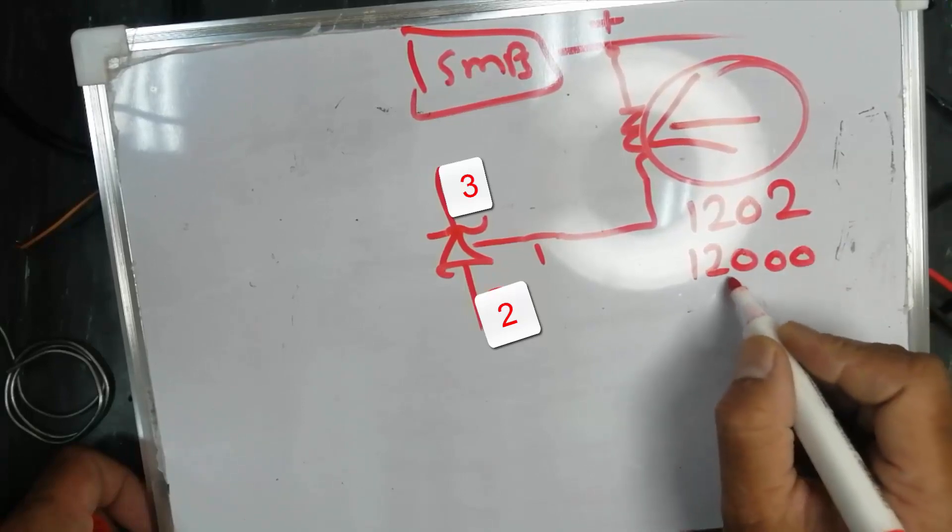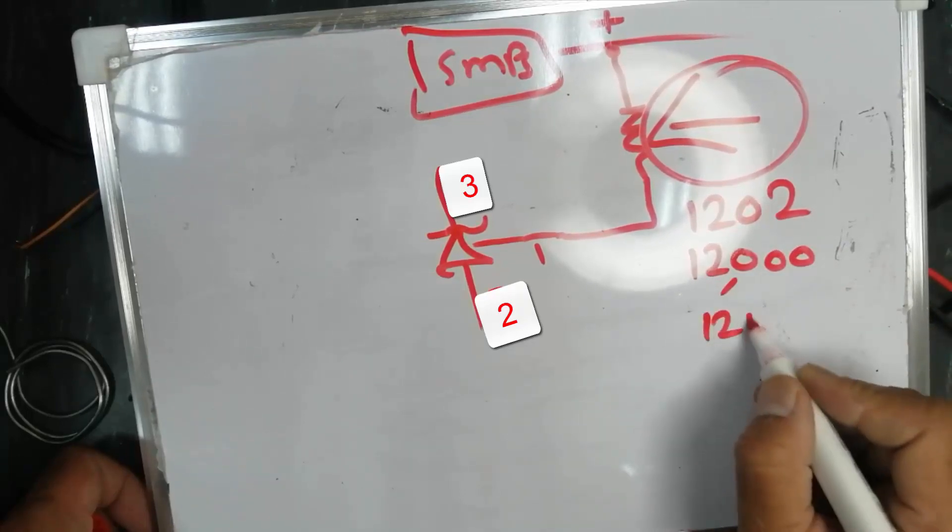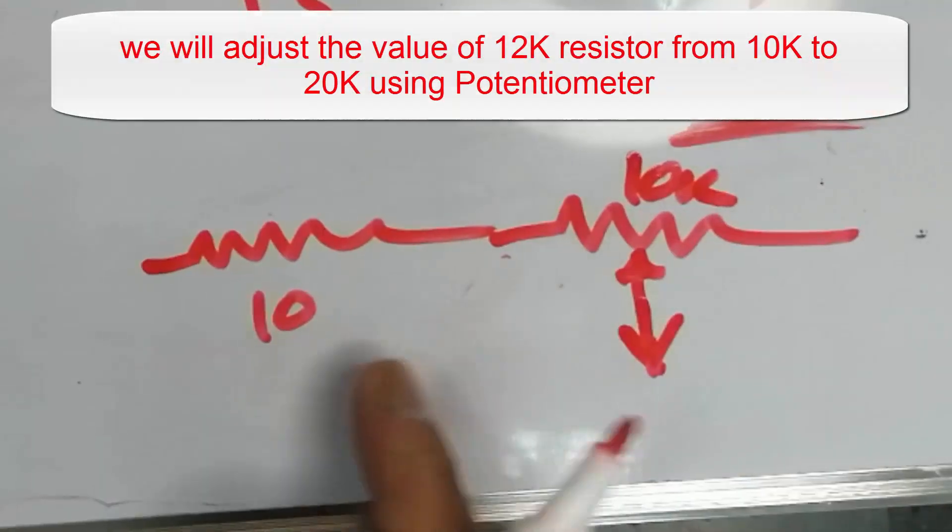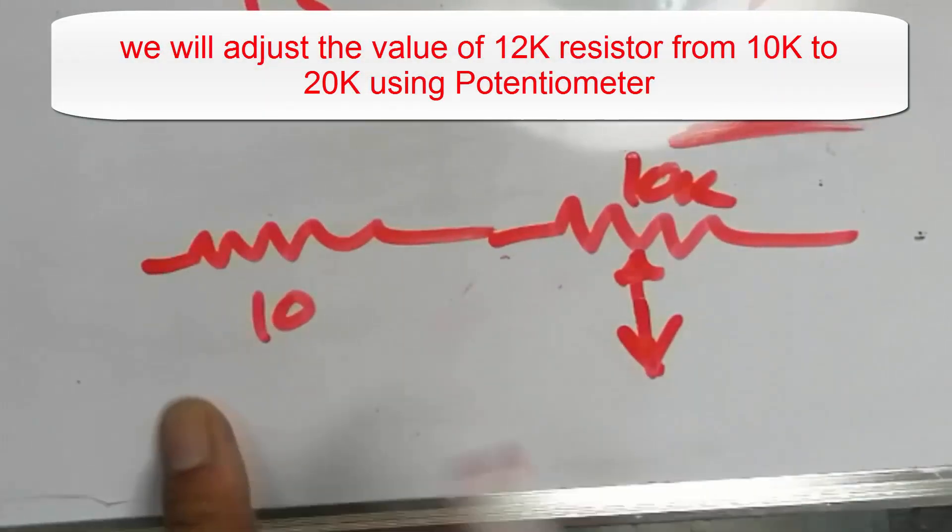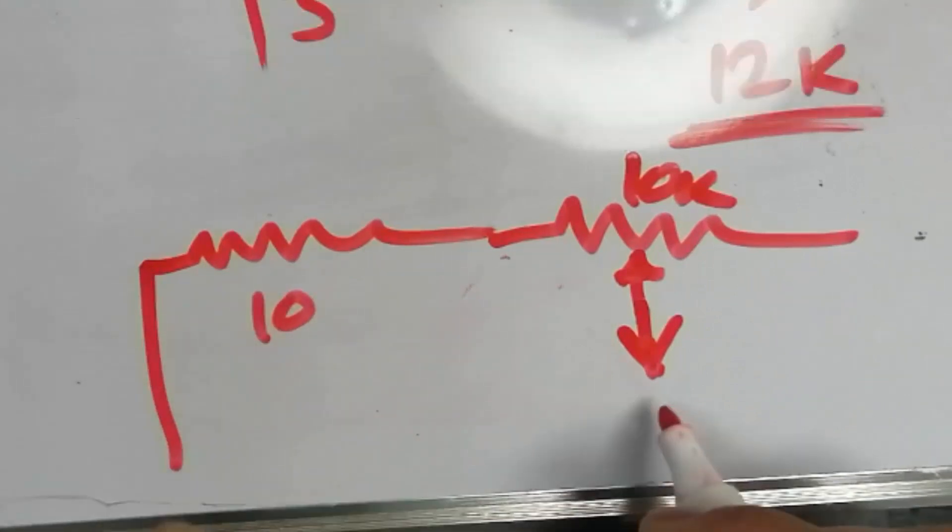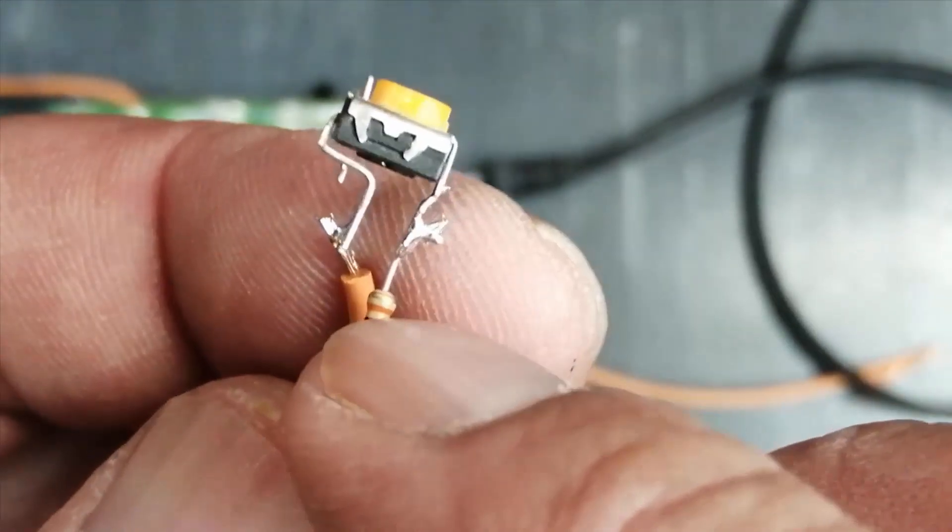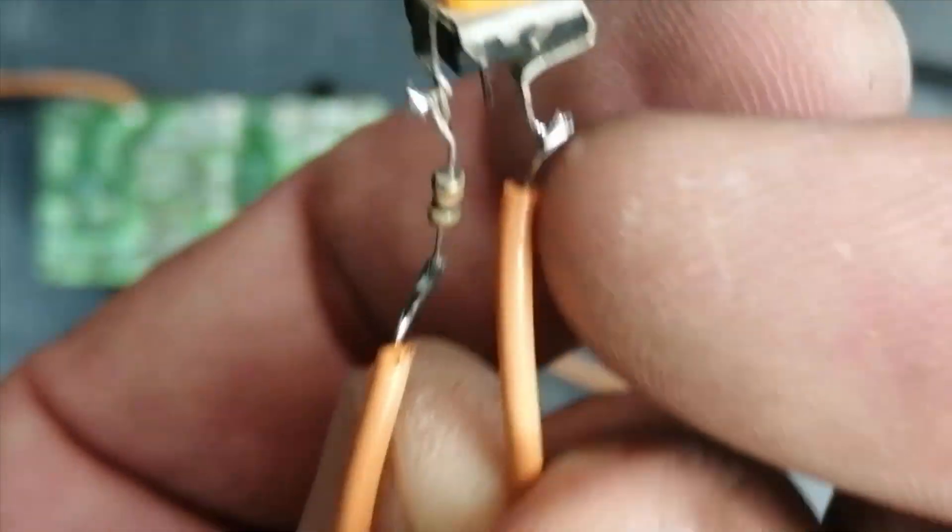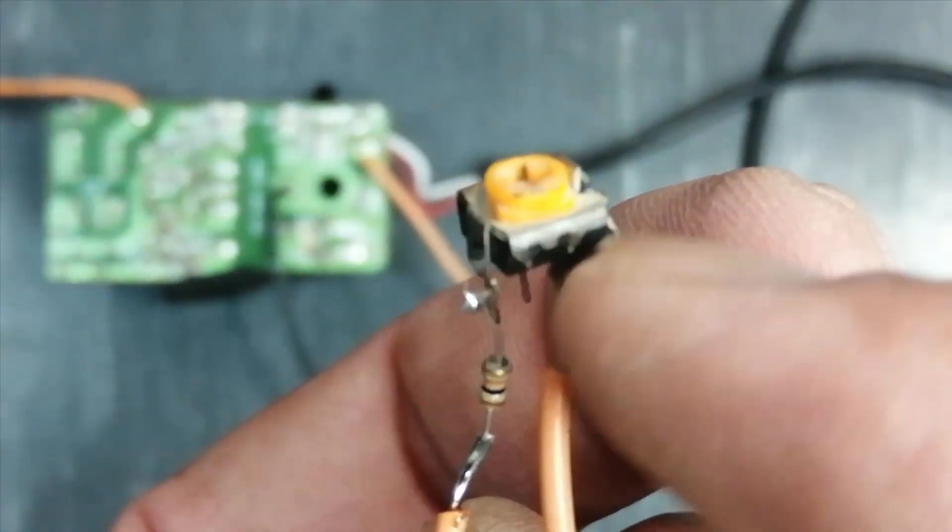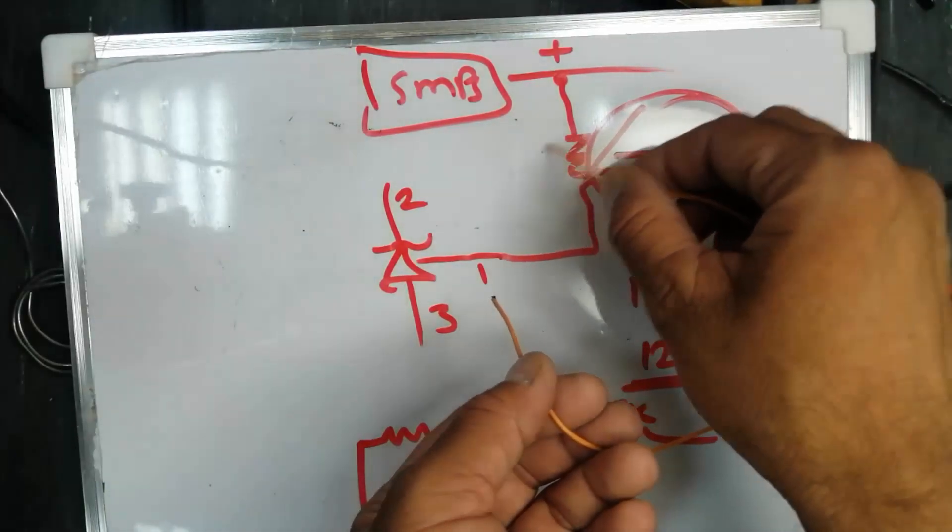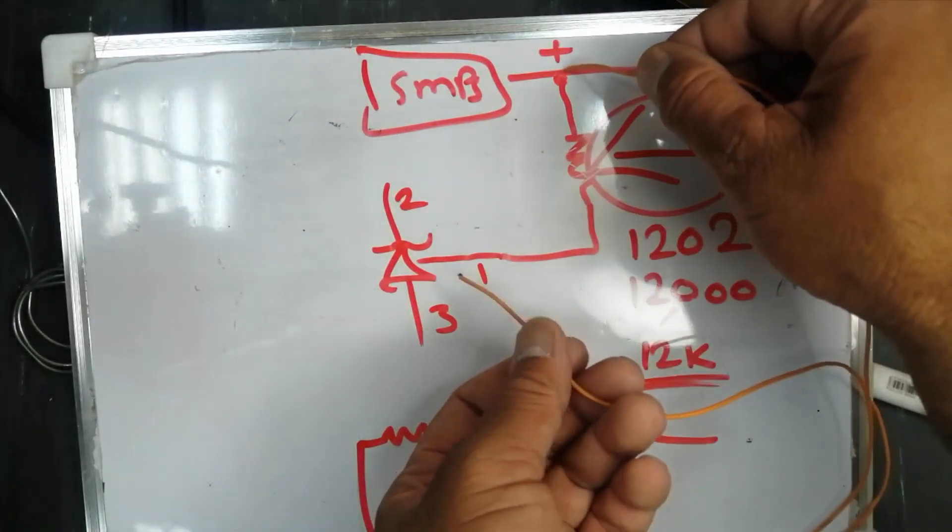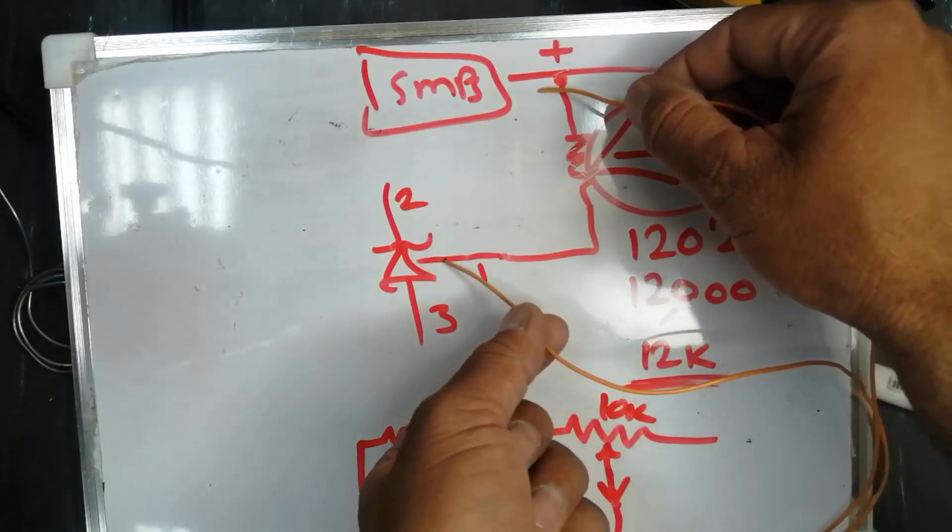So we will adjust from 10k to 20k. I installed a 10k potentiometer and connected one pin to it. We removed this resistor. Now we will connect it between the positive voltage and pin number one.